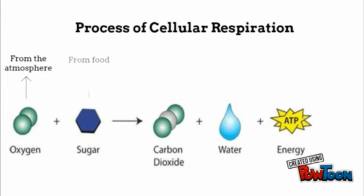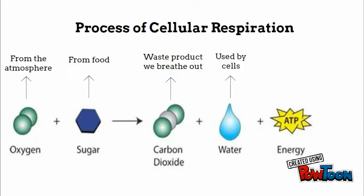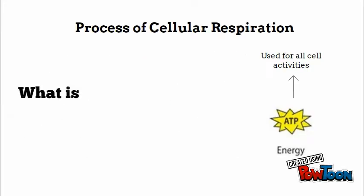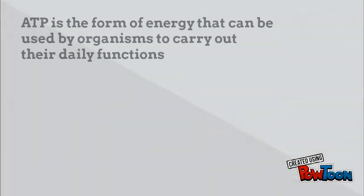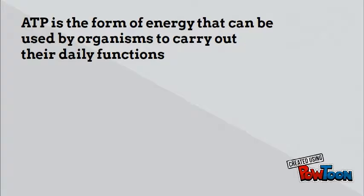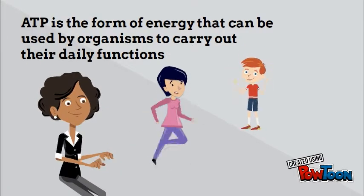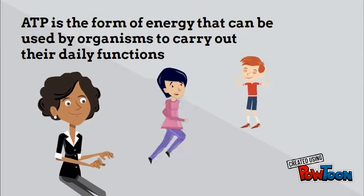Cellular respiration is exactly the opposite of photosynthesis. It takes oxygen and sugar produced from photosynthesis and converts them into carbon dioxide, water, and ATP energy. This ATP energy is what fuels our system and allows us to carry out our daily functions.